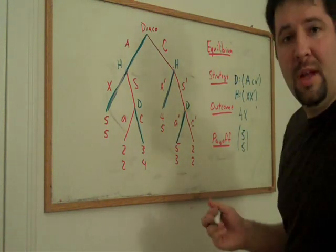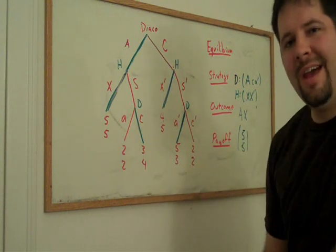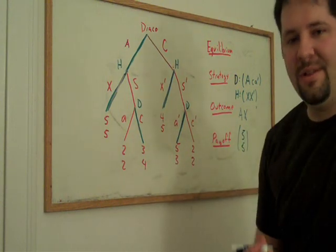We have the equilibrium strategies. We have the equilibrium outcome. And we have the equilibrium payoffs for each of the agents.